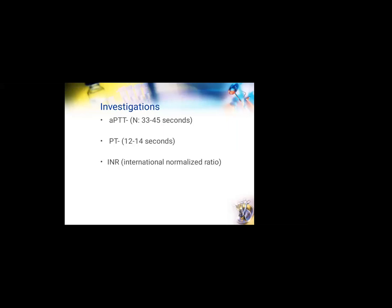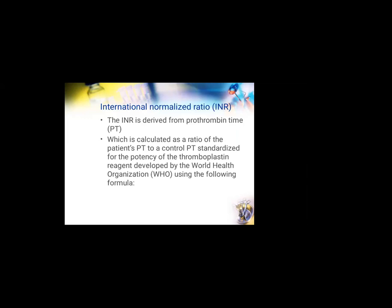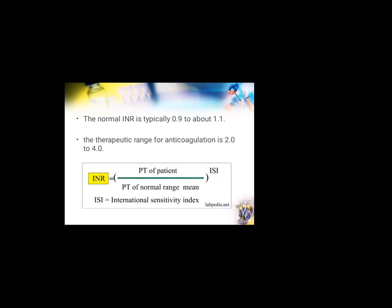Next comes the investigations we will order. Activated partial thromboplastin time (APTT) mainly assesses the intrinsic pathway of coagulation. Prothrombin time and international normalized ratio (INR) assess the extrinsic pathway of coagulation. INR is normally used for patients who are on anticoagulant therapy. It is a ratio of the prothrombin time of the patient to a control prothrombin time, raised to the power of the international sensitivity index. The normal INR in a healthy individual is 0.9 to 1.1, and the therapeutic range for a patient on anticoagulants is in the range of 2 to 4.